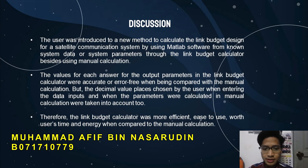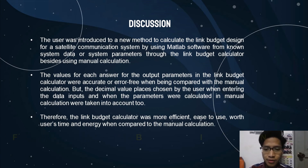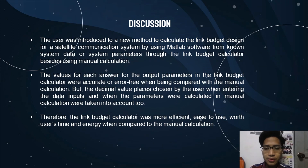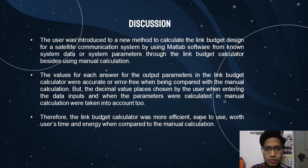The user was introduced to a new method to calculate the link budget design for a satellite communication system by using MATLAB software, from non-system data or system parameters through the link budget calculator, besides using manual calculation. The values for each output parameter in the link budget calculator will be accurate and error-free when compared with manual calculation, though the decimal value places chosen by the user when entering data inputs are taken into account. Therefore, the link budget calculator is more efficient, saving the user's time and energy compared to manual calculation.